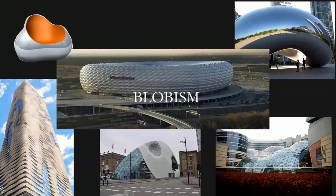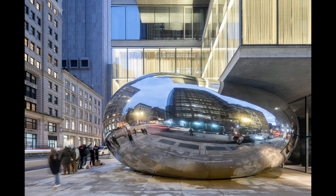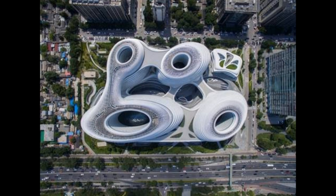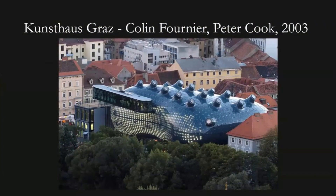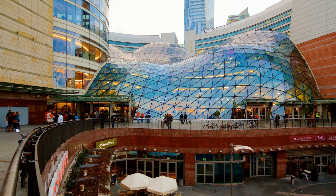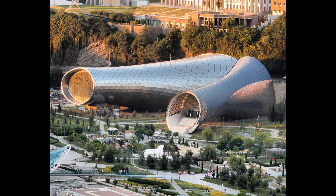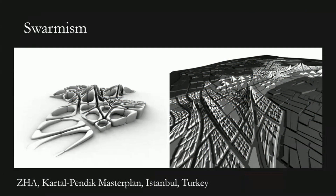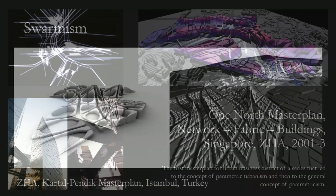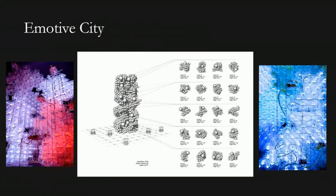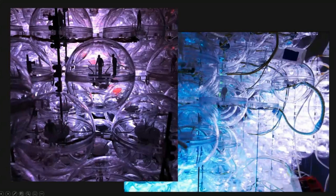Blobism explores the realm of amorphous, organic shapes made achievable through parametric modeling and digital fabrication. Architects such as Greg Lynn have redefined architectural aesthetics by creating fluid and unconventional forms, showcasing the potential of parametric tools to reshape our perception of architectural design. Swarmism, a more recent trend, integrates responsive and adaptive technologies into architecture, envisioning buildings that can dynamically adapt to changing environmental conditions, making them intelligent and adaptable entities.